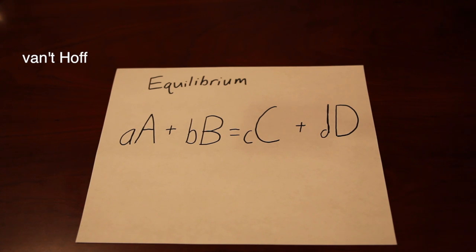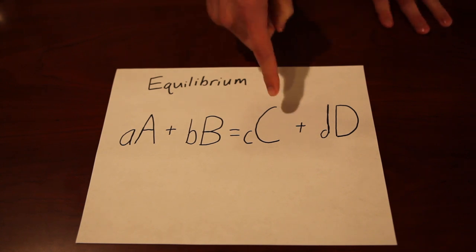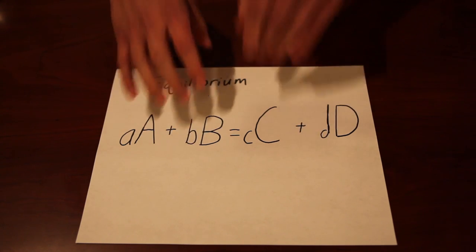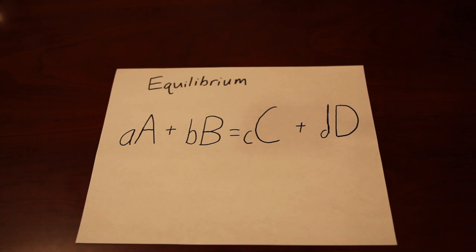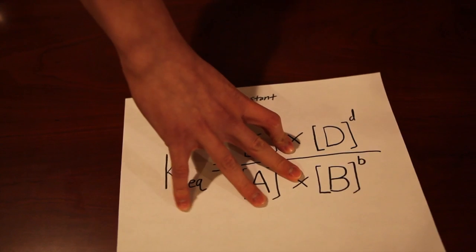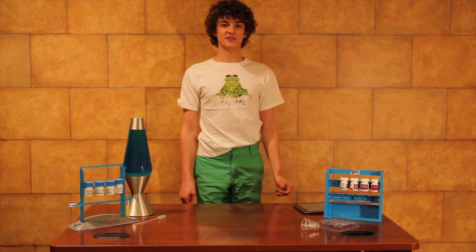Here's the expression that Vanhoef came up with: the big A and the big B represent the reactants, and the big C and the big D represent the products. All the lowercase letters represent the coefficients. Now that people aren't stupid anymore, we use this.